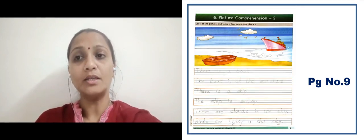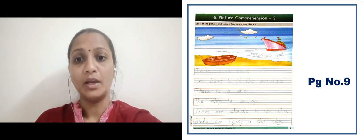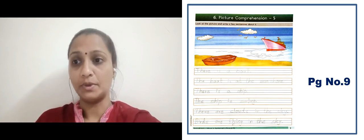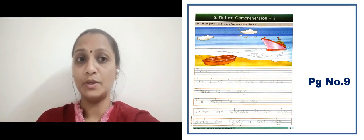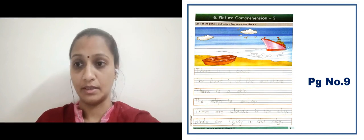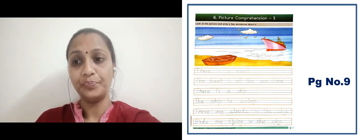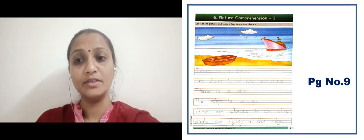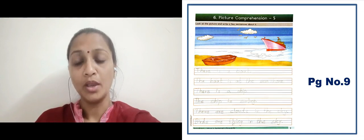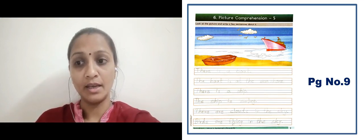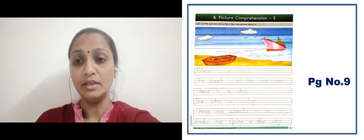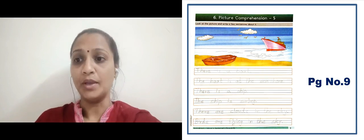In the next slide there is a picture comprehension on page number 9. Here we have to observe the image and say sentences. There is a boat — the boat is at the seashore. There is a ship — the ship is sailing. There are clouds in the sky. Birds are flying in the sky.